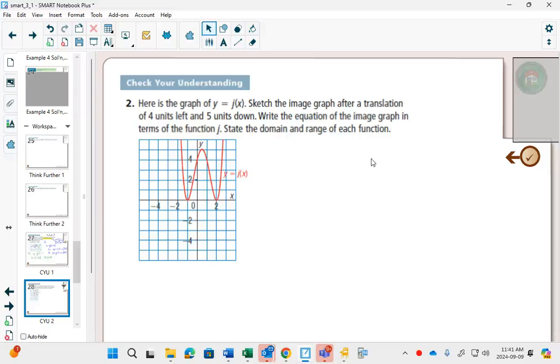So here's the graph of J of X. Sketch the image after a translation of 4 units left and 5 units down. So if I do that, I would take, it looks like these are key points on my graph.